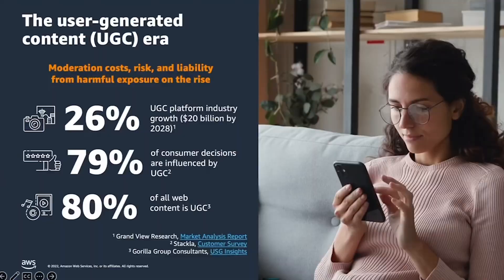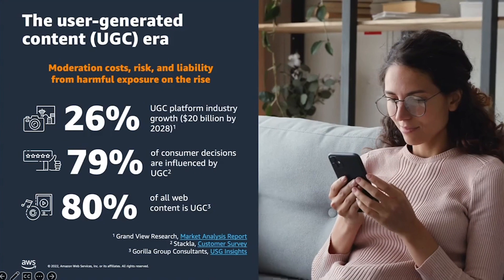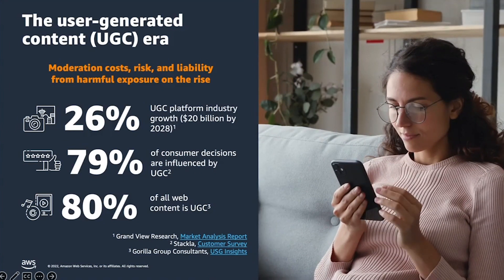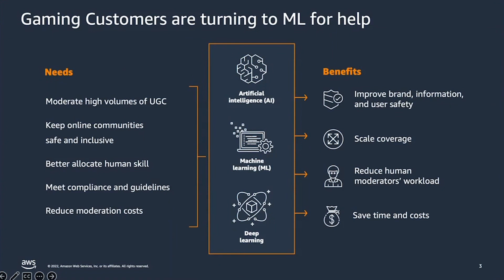Today, 80% of all web content is user generated content ranging from gaming, social media, and online forums. Companies are struggling to deal with a sudden increase in volume, complexity, and costs associated with content moderation. They're turning to AI, ML, and deep learning to gain the accuracy and efficiency needed to keep online environments, customers, and information safe, while reducing content moderation costs, as human-based content moderation alone cannot scale to meet operational needs.